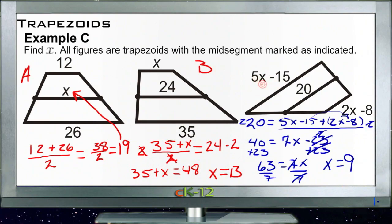So that tells us that if x is 9, then we have 5 times 9, which is 45 minus 15, that's 30, so this base was 30. And 2 times 9 is 18 minus 8 is 10, so this base is 10. And of course, the average of 30 and 10 is 20, so we nearly got it right.